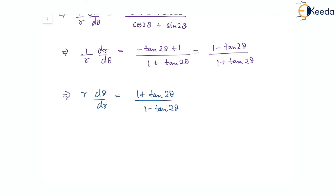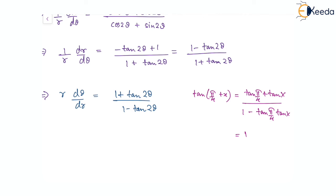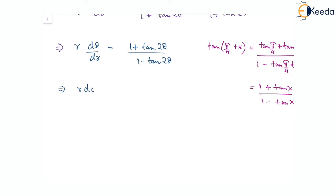Now, using the tan addition formula: tan(π/4 + x) = (tan(π/4) + tanx)/(1 − tan(π/4)·tanx) = (1 + tanx)/(1 − tanx). Comparing our expression with this identity, we set x = 2θ, giving r(dθ/dr) = tan(π/4 + 2θ).